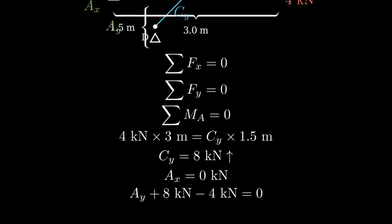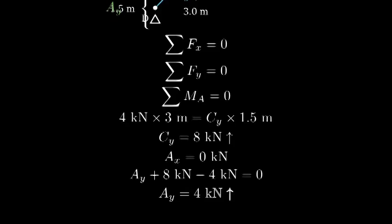For vertical forces, Ay plus eight kilonewtons minus four kilonewtons equals zero, giving us Ay equals negative four kilonewtons, meaning four kilonewtons upward.